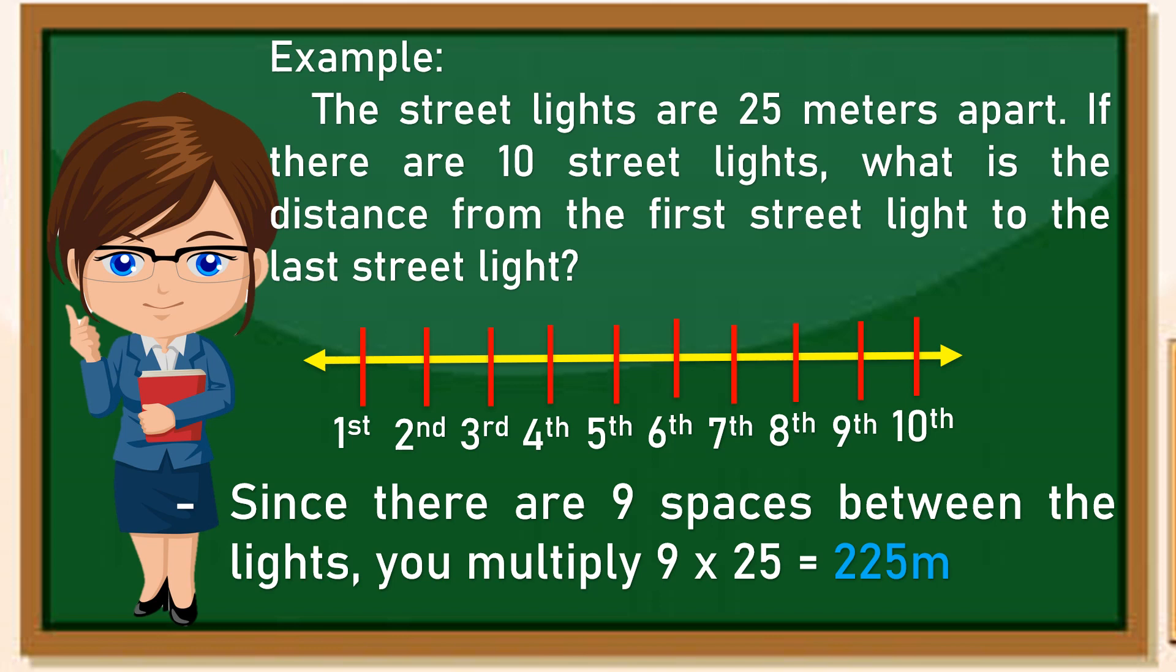Ngayon since there are nine spaces between the lights, you multiply nine times 25 which is equal to 225 meters. Ito daw yung merong nine spaces or pagitan sa mga lights or post na kung saan merong measurement na 25 meters, kaya minultiply natin ito. Therefore ang distance daw ng first light hanggang sa last street light which is at 10 ay 225 meters. Diba napakadali lang at napakasimple? So ito po ang tinatawag nating non-routine word problems.